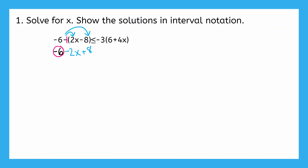Now I have two constant terms, so I can combine those. It's important to include the operation before the constant to see that I have a negative 6 and a positive 8. That makes positive 2, and I'll bring down my minus 2x. So fully simplified, the left side makes 2 minus 2x.